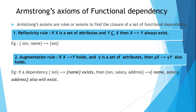To derive a set of functional dependencies we have to use some set of rules. In today's class we will study these rules, which are used to derive functional dependencies — Armstrong's axioms of functional dependencies. Armstrong's axioms are six rules used to derive functional dependencies and to define the closure of a set of functional dependencies.